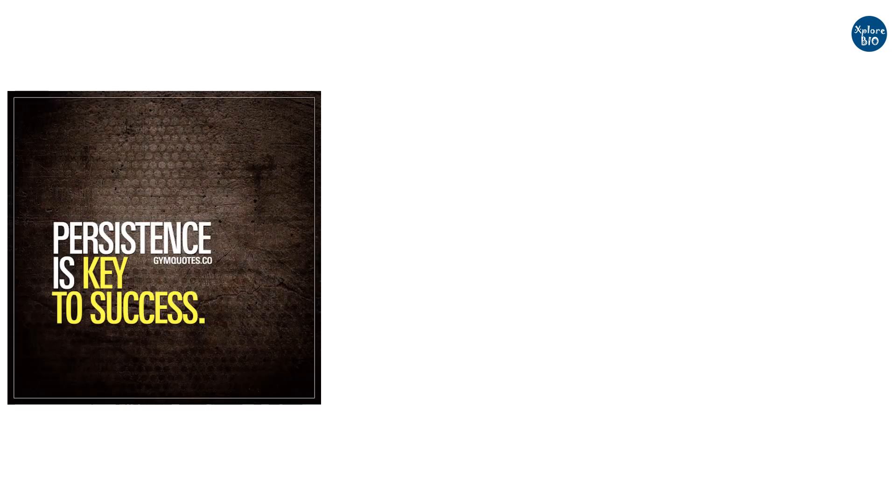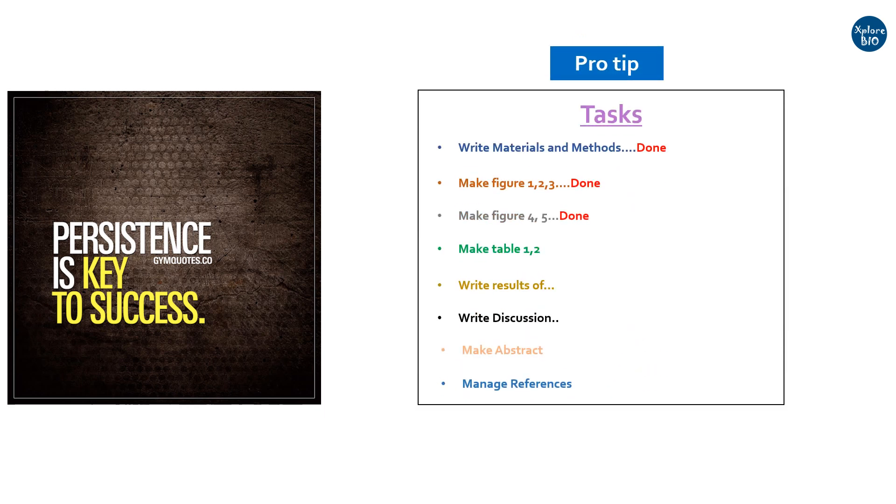A great research paper is not written in a single day. It requires persistent efforts. And here comes a pro tip number two. Break the aim of the whole paper into small pieces of tasks. When you complete a task, mark it done. You can also make an excel sheet for it to record your progress. This will help you to keep motivated to write quickly.